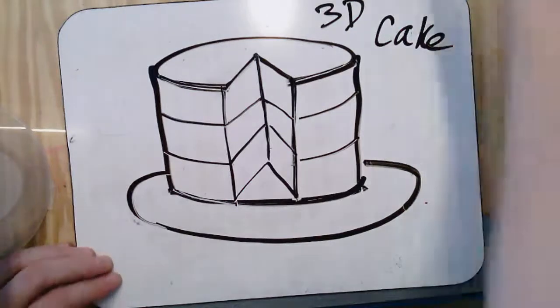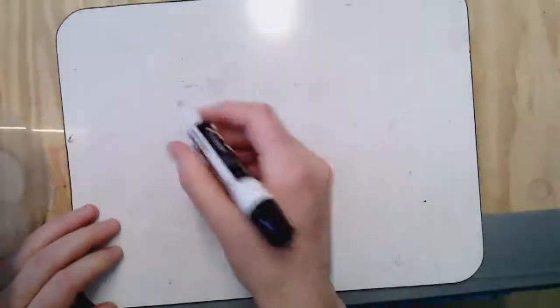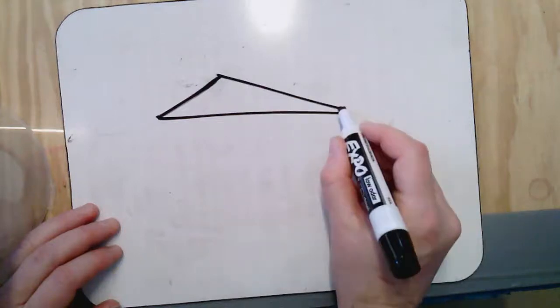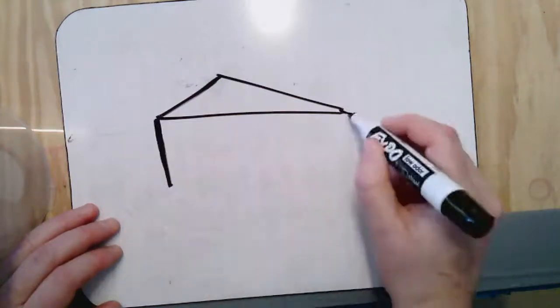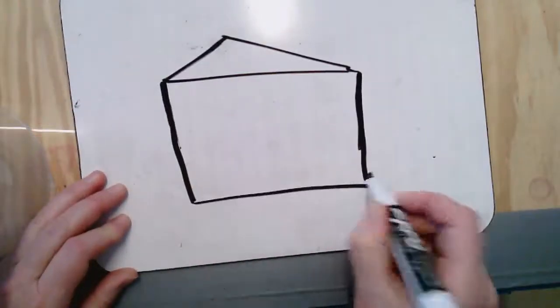Nice. Alright, let's make the piece of cake. I'm going to start with a triangle. Draw table legs on the triangle. Ooh, I want my cake a little bit taller. 3 layer cake. Draw this down.